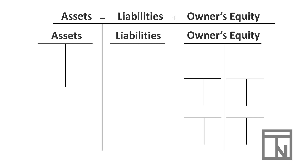We also learned a concept called debits and credits. Debits and credits are just two different kinds of numbers that are used to record the increases and decreases of these different categories. Debits represent the left side of the accounting equation, so underneath each category I'm going to write debits on the left side. Credits represent the right side of the accounting equation, so on the right side of each of these categories I'm going to record credit.